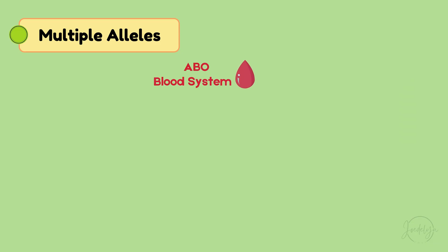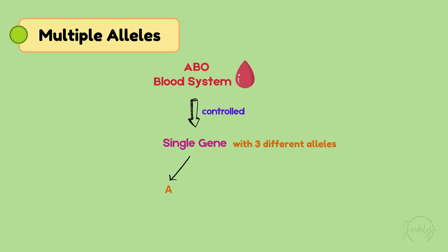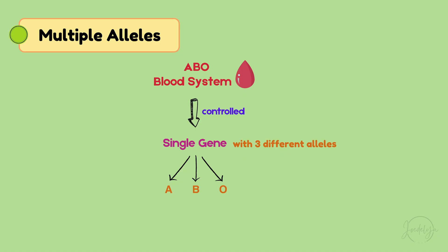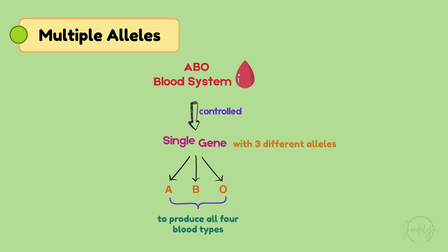The ABO blood group system is controlled by a single gene with three different alleles: allele A, allele B, and allele O — also called I, the recessive form. These multiple alleles combine in different ways to produce all four blood types.